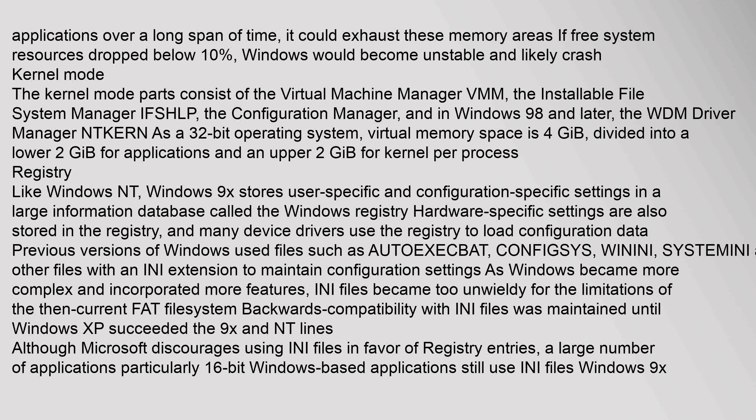The user mode parts of Windows 9x consist of three subsystems: the Win16 subsystem, the Win32 subsystem, and MS-DOS. Windows 9x ME set aside two blocks of 64 kilobytes memory regions for GDI and heap resources. By running multiple applications with numerous GDI elements, or by running applications over a long span of time, it could exhaust these memory areas. If free system resources dropped below 10 percent, Windows would become unstable and likely crash.